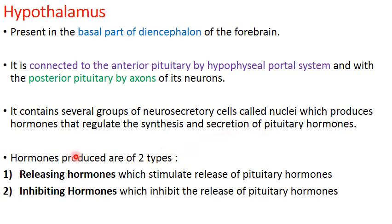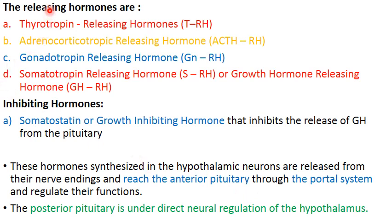The hormones produced by the hypothalamus are of two types: releasing hormones, which stimulate the release of pituitary hormones, and inhibiting hormones, which inhibit the release of pituitary hormones. Among the releasing hormones, thyrotropin releasing hormone (TRH) goes to the anterior pituitary and stimulates the secretion of thyroid stimulating hormone. The abbreviation 'RH' indicates a releasing hormone released from the hypothalamus.